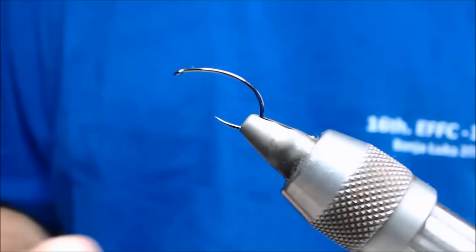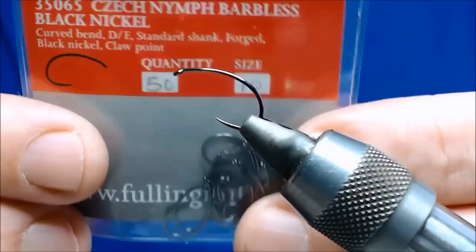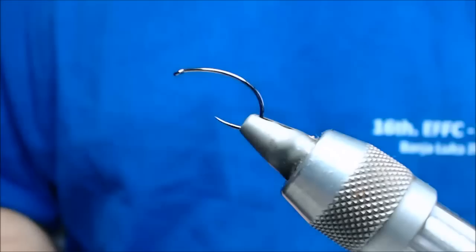This is a size 10 Fulling Mill check nymph, barbless, black nickel, bronze, black. Either says it's your own preference what you want to tie it on.